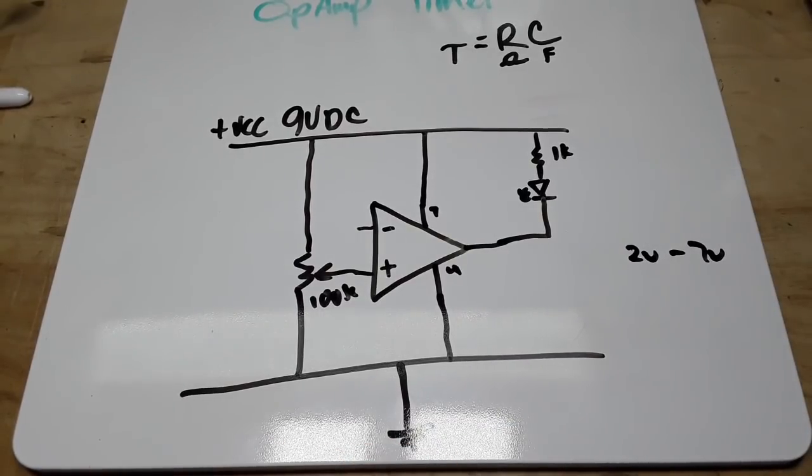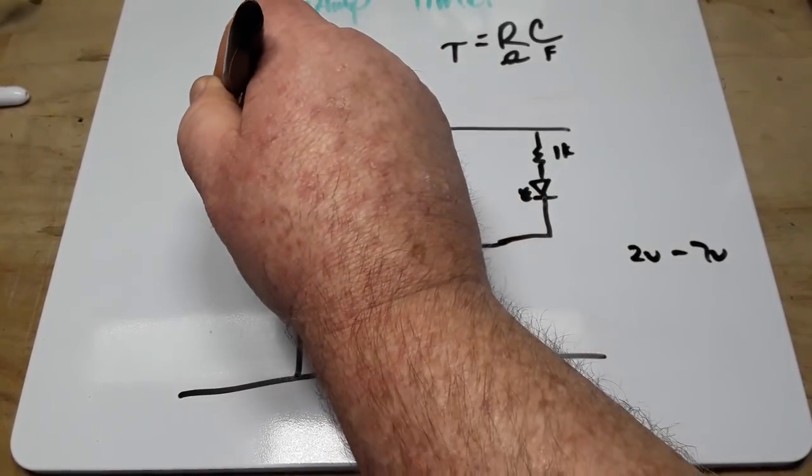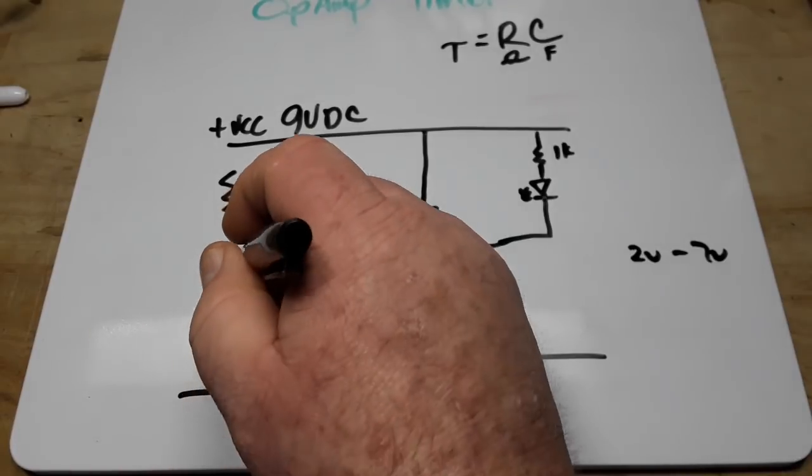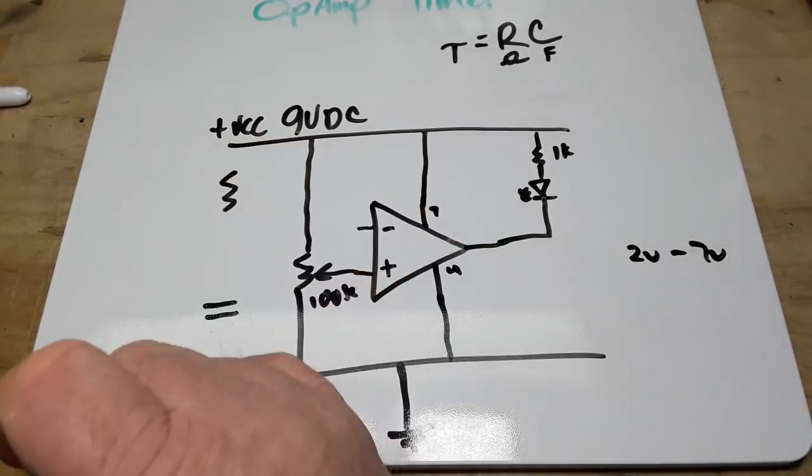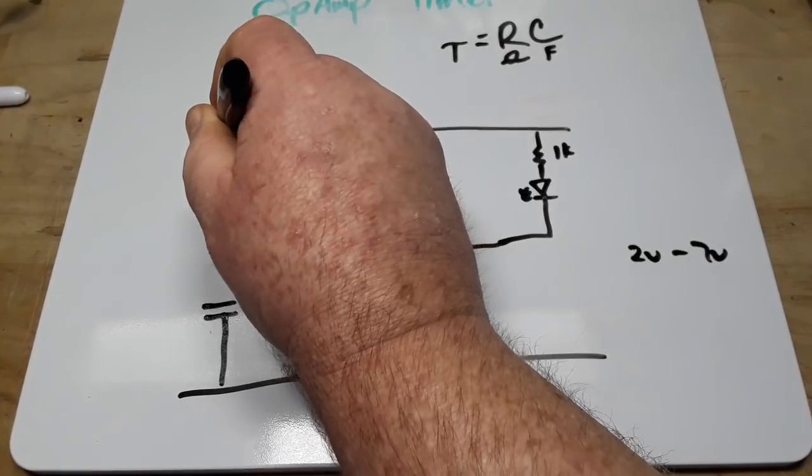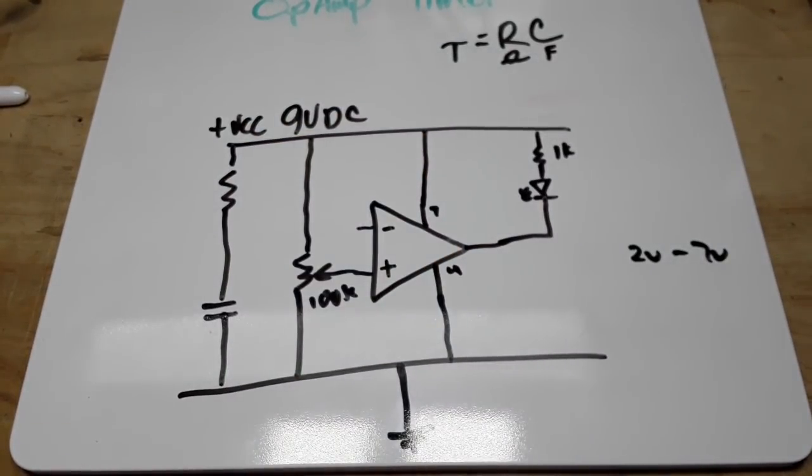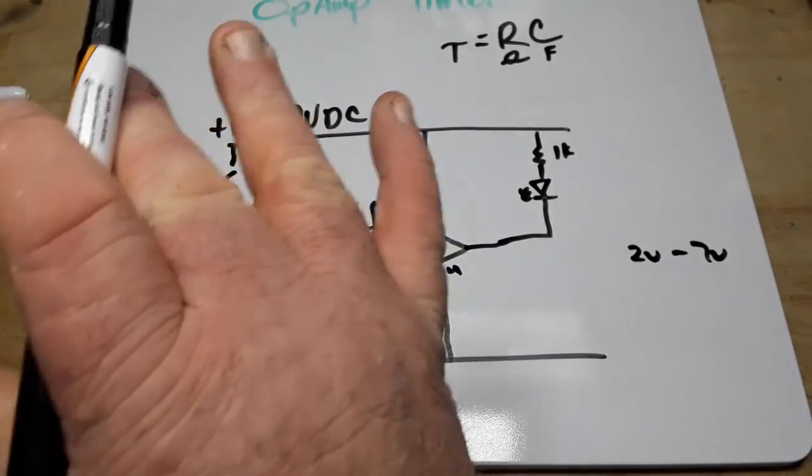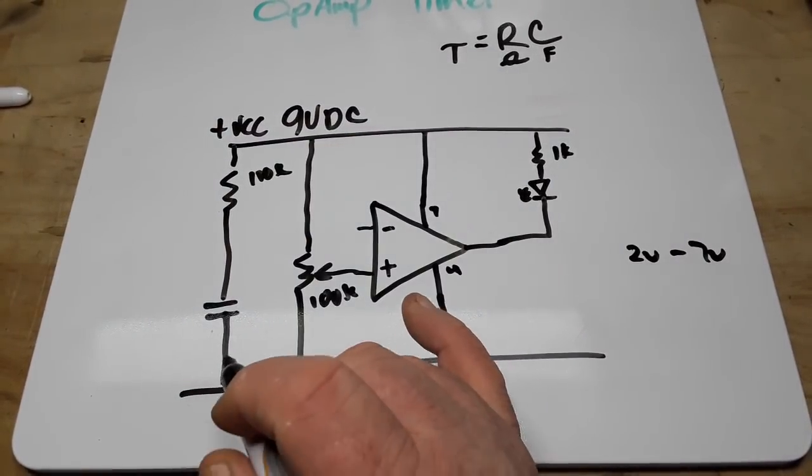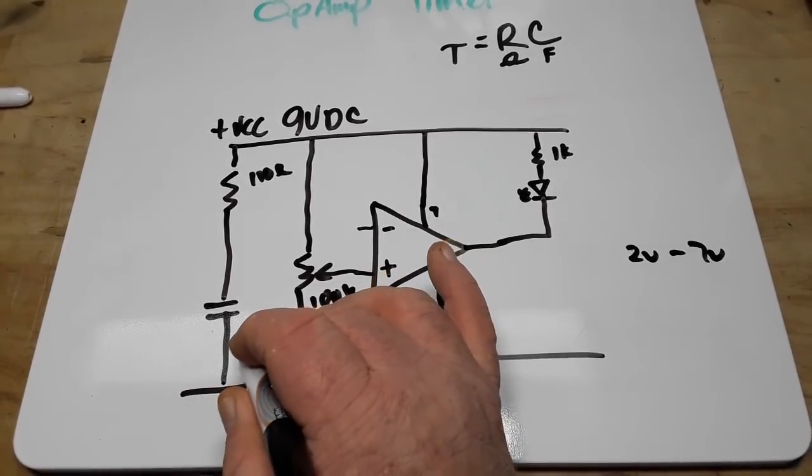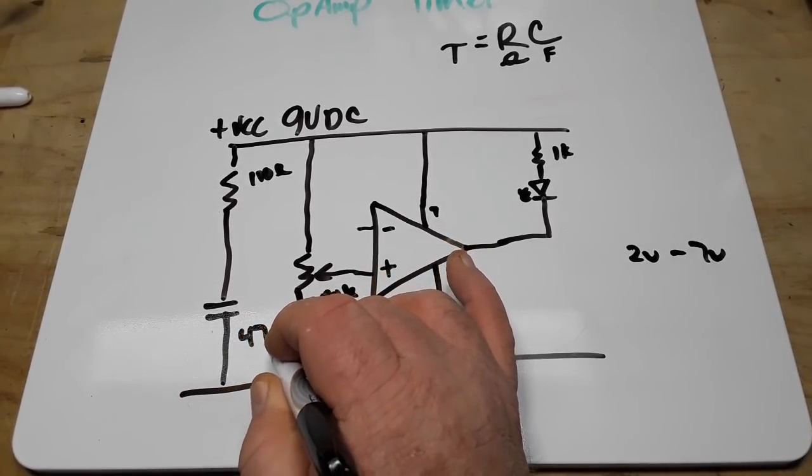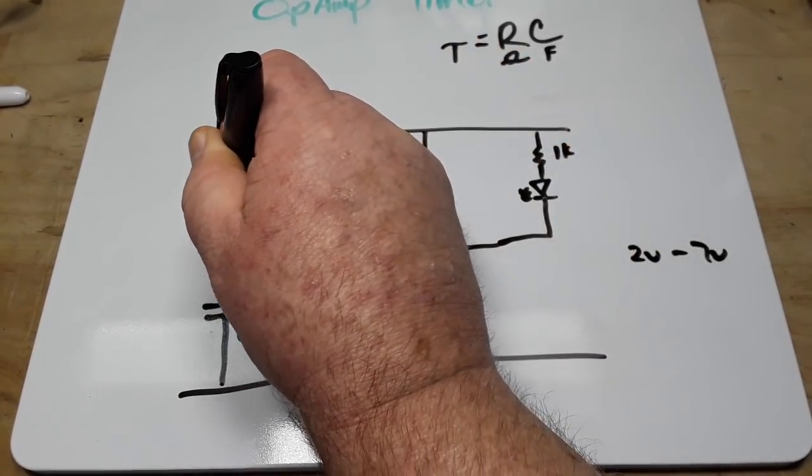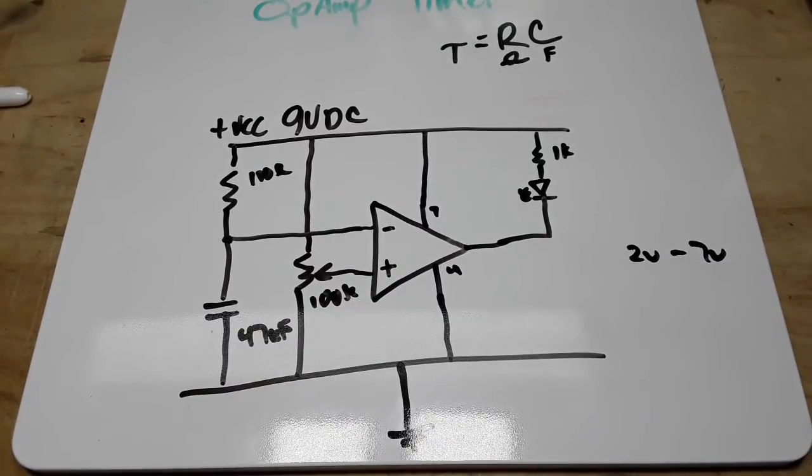And now we need to set up our RC circuit. So we're going to have another resistor over here, going to a capacitor, goes to ground. And for this case, we'll use another 100k. I like 100k. I like to keep it easy. Keep the math easy. And let's say 47 microfarad capacitor. That goes into the inverting input.